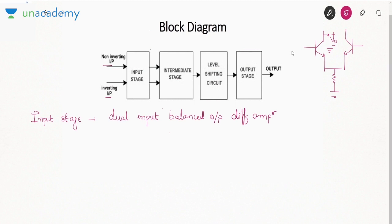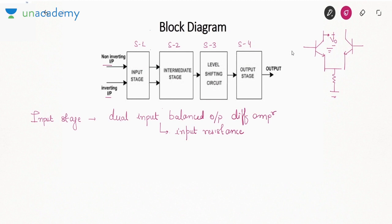The input stage is important because it establishes the input resistance of the op-amp. In a multi-stage amplifier, the input resistance is always governed by the first stage, and the output resistance is always governed by the last stage. Op-amp is a direct coupled amplifier, meaning the output of one stage is directly connected to the input of the next stage with no components in between.